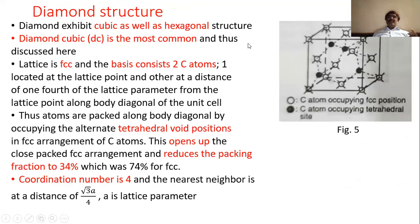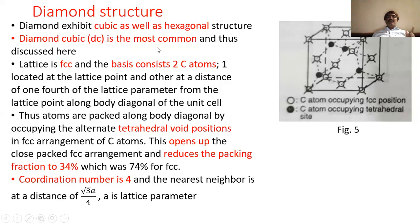Now let us study the diamond structure. Diamond is the hardest material on earth and it is a gem. Diamond exhibits two different structures: cubic and hexagonal - diamond cubic and diamond hexagonal. Of these two, diamond cubic is the most common for the diamond crystal, so we will discuss the diamond cubic (DC) structure here.